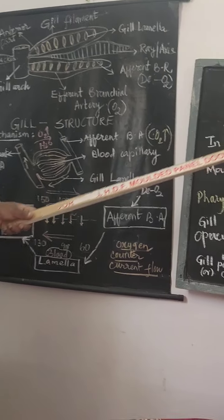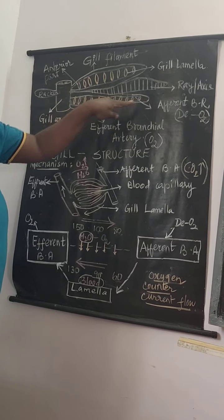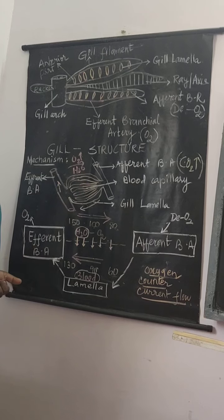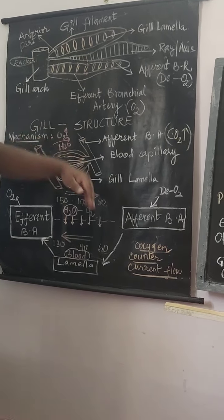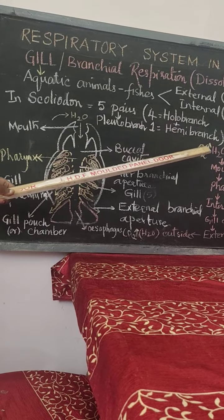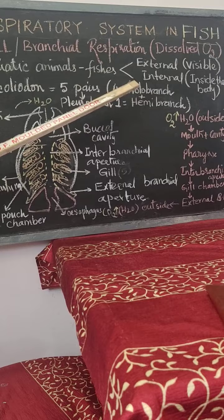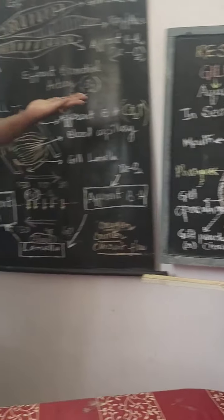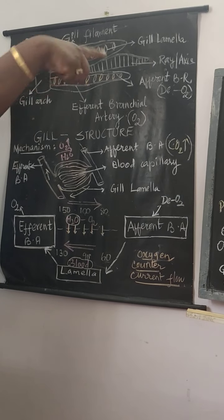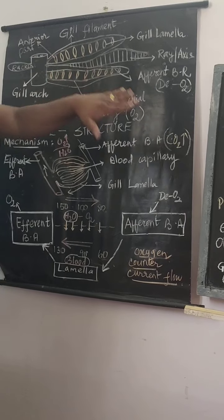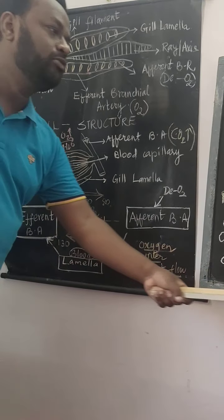Now we will understand the terms holobrach and hemibrach. The gill generally has a gill arch, attached to which is the gill filament, and the gill filament has the plates of gill lamella. If you find the gill lamella towards only one side of the gill filament, you call it a hemibrach — hemibrach means half. If it is a holobrach — holobrach means complete — the gill filament will have lamella on both sides. If the gill filament is only on one side, it is hemibrach; if on both sides, it is holobrach. This completes the respiratory system of fish, including the structure of the gill.